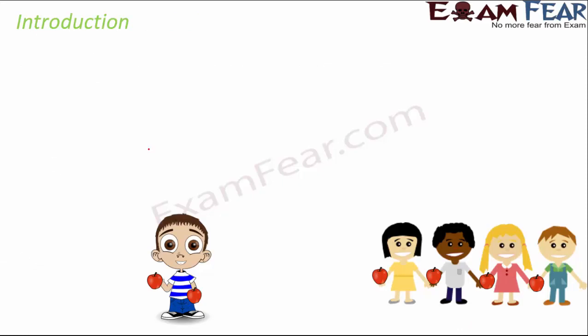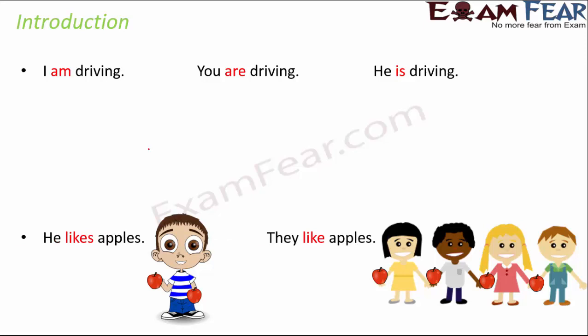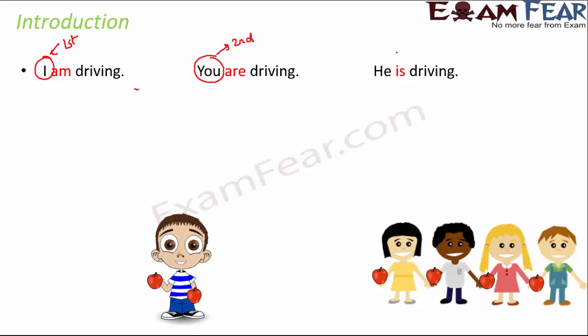So, the lesson says subject-verb agreement. What do we actually mean by that? Let us look at some examples to understand. We have three sentences: I am driving, you are driving, and he is driving. In the first example, 'I' is a first person, 'you' is a second person, and 'he' is a third person.